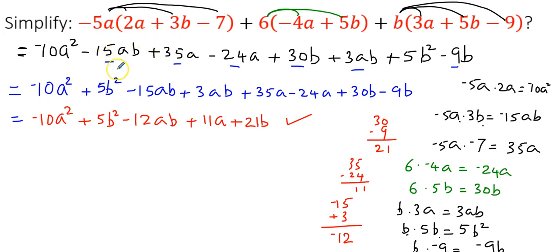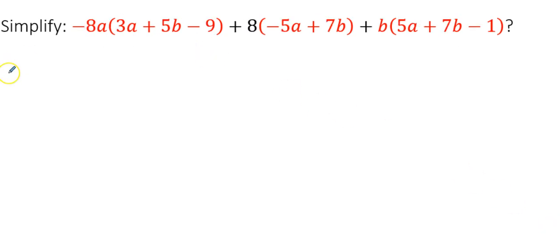5a is multiplied with all 3 terms, 6 is multiplied with those 2 terms, and b is multiplied with the 3 terms. After that multiplication, you group the like terms, then combine the like terms in the last step. Now here is one problem for you: negative 8b times 3a plus 5b minus 9, plus 8 times negative 5a plus 7b, plus b times 5a plus 7b minus 1. Please try this.